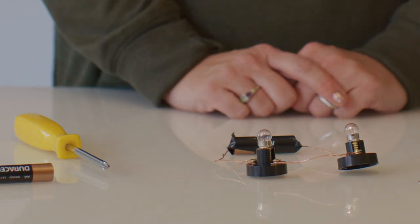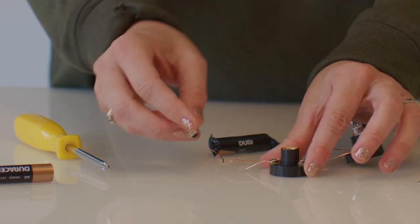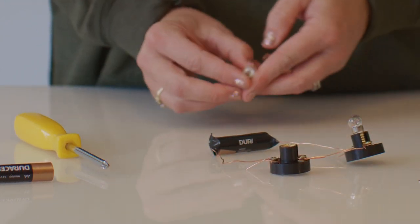Let's see what happens when we unscrew one of the light bulbs in this circuit. As you can see, the circuit is broken and the flow of energy to both light bulbs stops.